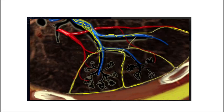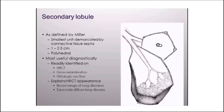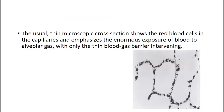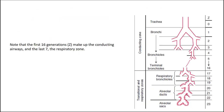Gas exchange starts at the respiratory and terminal bronchioles, and at that point there is no cartilage. As you know, from the trachea down to the alveolar sacs there are about 23 subdivisions. Respiratory or gas exchange begins when you lose the cartilage and start having alveolar pods — from around the 16th division — and that helps us interpret the CT scan.